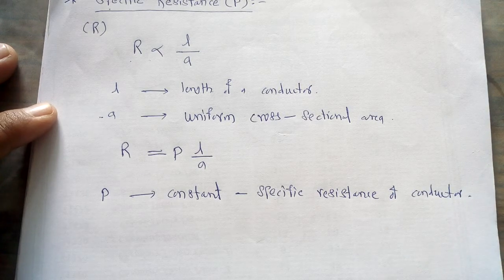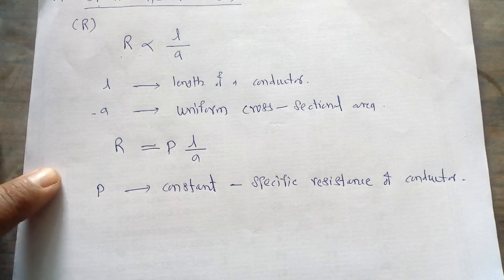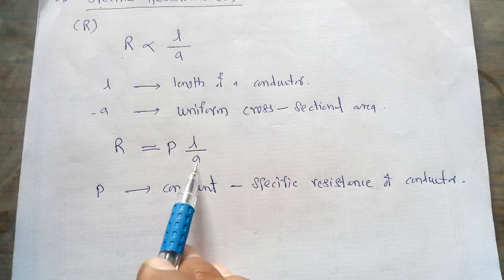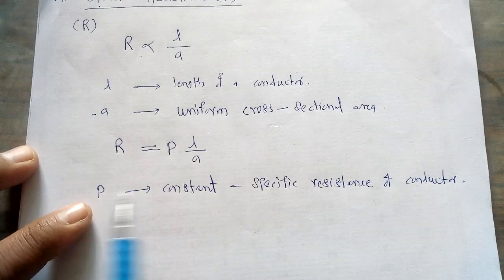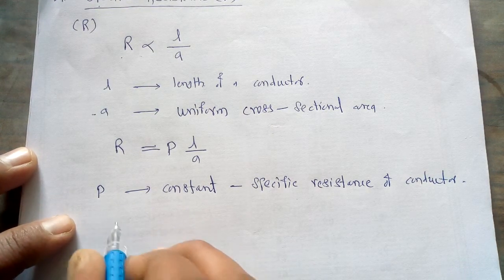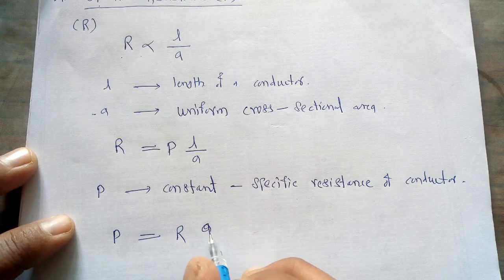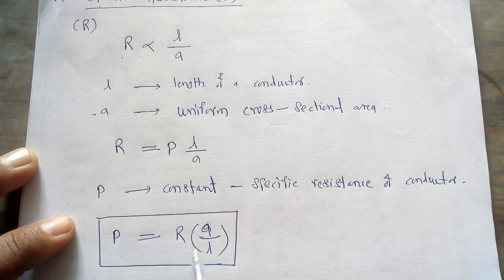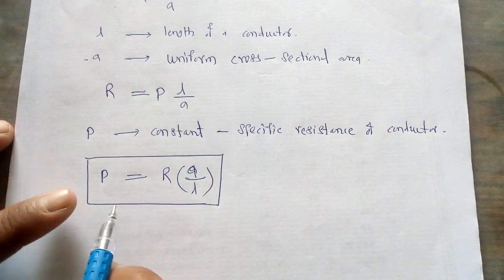So whenever we consider the specific resistance of a conductor, it means we consider the length of the conductor and its area of cross section, and the resistance of the conductor is given by ρ × L / A, in which the constant ρ is called the specific resistance. Rearranging this equation, we get ρ = R × A / L. This equation is used to calculate the specific resistance of a conductor.